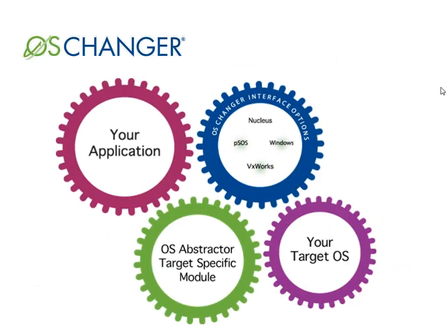OS Changer Porting Kit is a tool for porting embedded applications written in C and C++. The original application, shown in the red gear on the far left, connects to the appropriate OS Changer interface depending on which OS the application was written to, shown in the blue gear. The application also connects to a target-specific module written for the new target OS, utilizing OS abstractor from the cross-OS development platform, shown in the green gear. Once the application is linked to both the interface and target module, it will run on the new target OS, shown in the purple gear.